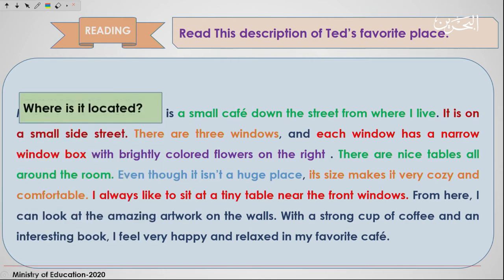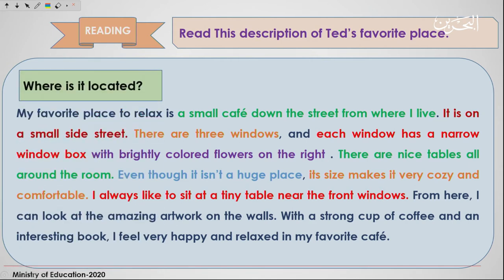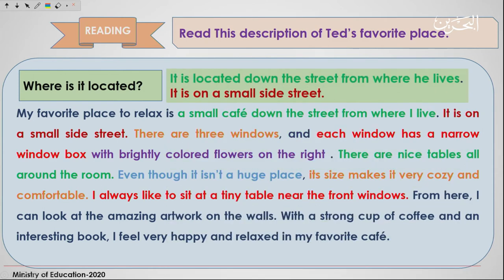The next question: where is it located? Here we use prepositions. It is located down the street from where he lives — it is on a small side street.